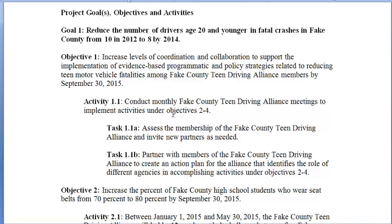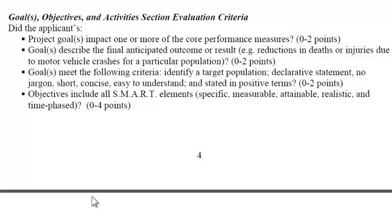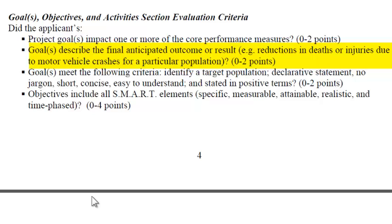Speaking of points, we probably should go through the evaluation criteria and give ourselves an assessment to see how we're doing so far. Here's the evaluation criteria: Did the applicant project goals impact one or more of the core performance measures? I think, yes, it did — we have it specifically tied to the young driver performance measure, so that meets that. The goal describes the final anticipated outcome or results — for example, reductions in deaths or injuries due to motor vehicle crashes for a particular population. Yes, we are reducing the number of 16 to 20-year-old drivers in fatal crashes. Did our goal meet the following criteria: target a specific population — yes, young drivers; declarative statement, no jargon, short, easy to understand — I think we'll actually score pretty well there.